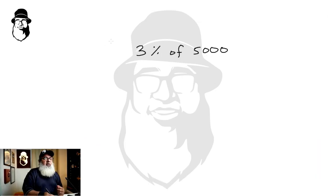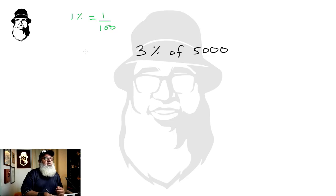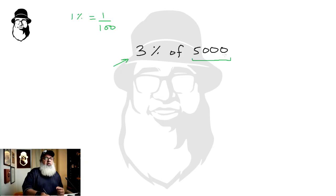To find three percent of five thousand: one percent is one hundredth, so we find one percent of any number by dividing it by hundred. One percent of five thousand is fifty, and three percent is three times fifty, which is one hundred and fifty. So three percent of five thousand is one hundred and fifty.